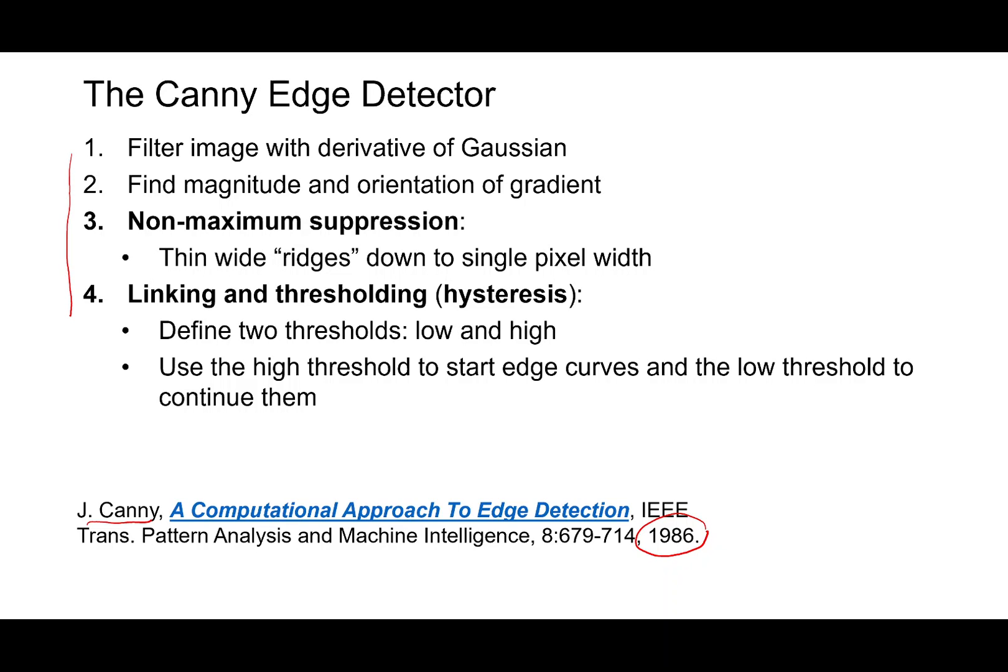The first step is we filter the image with the derivative of the Gaussian, which detects the edge points, then find the magnitude and orientation of these gradient points. And then we have to do a non-maximal suppression step because these edge points are usually thicker than one pixel. We have to get a single pixel thick ridges out of these high gradient regions.